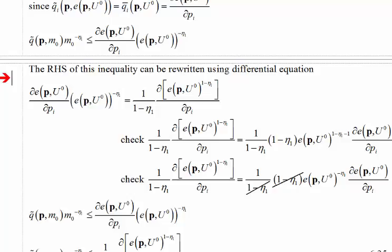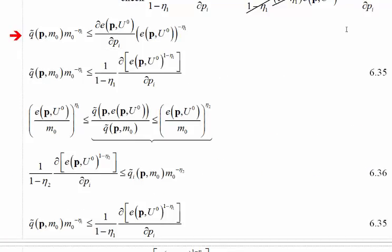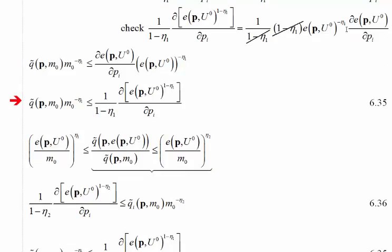Now we get a little fancy. We use the fact that the right-hand side is a differential equation and solve it. Specifically, the derivative of the expenditure function with respect to price times the expenditure function to the negative eta1 equals 1 over (1 minus eta1) times the derivative of the expenditure function to the (1 minus eta1) with respect to price. You can verify this by taking the derivative and simplifying — the 1 over (1 minus eta1) cancels out, leaving exactly the expression we had above. Hence the inequality can be rewritten in this new form.